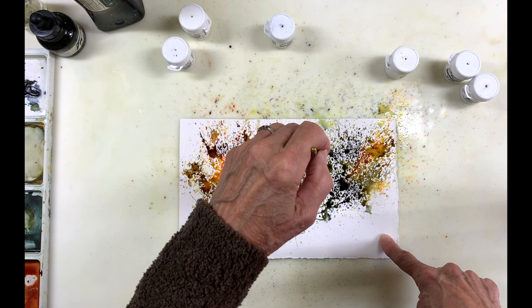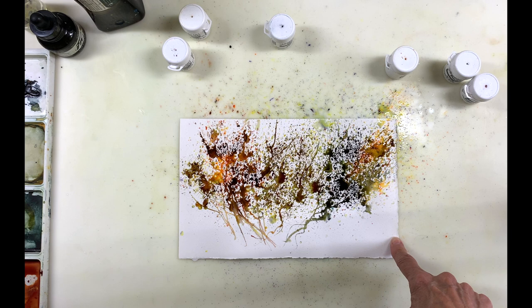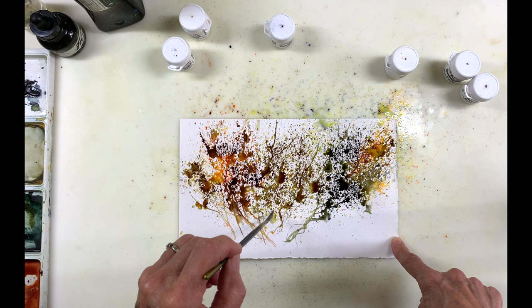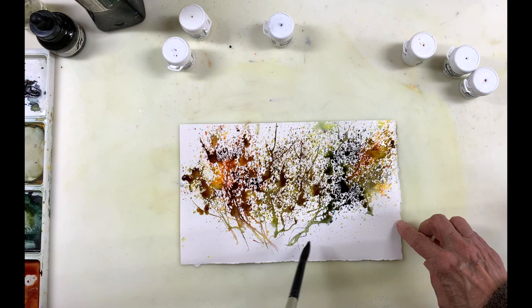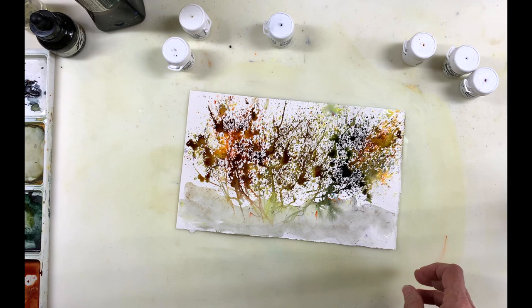Later on, I used some black with the watercolors and it was too dark and I did lift some of it and you'll see that. So here I'm just playing around with the dagger brush and basically doodling. Now I'm going to show you by totally wetting the bottom here. And this is another way to add brusho that gives you a totally different effect.